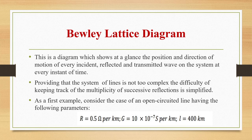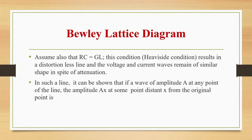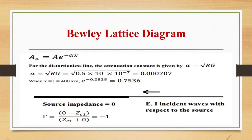As a first example, consider the case of an open-circuited line with the following parameters: resistance 0.5 ohms per kilometer, conductance 10×10⁻⁷ Siemens per kilometer, length 400 km. Assume RC = GL (distortionless line condition), so voltage and current waves remain of similar shape despite attenuation. For a distortionless line, attenuation constant α = √(RG) = √(0.5 × 10 × 10⁻⁷) = 0.000707 nepers/km. When X = L = 400 km, e^(−αL) = e^(−0.2828) = 0.7536.